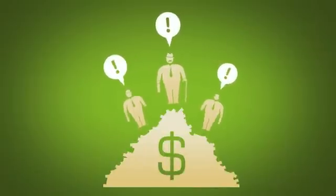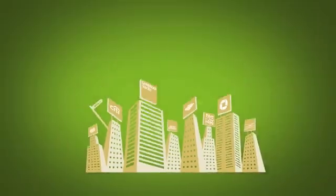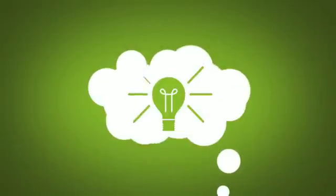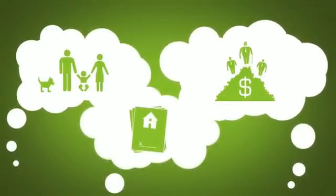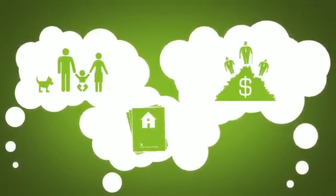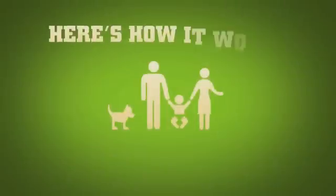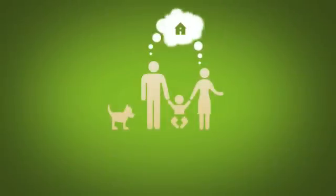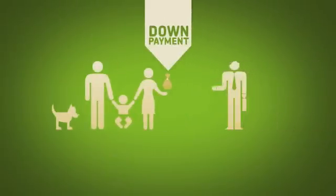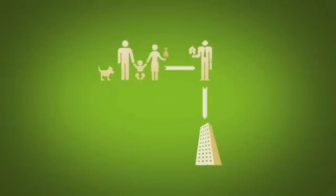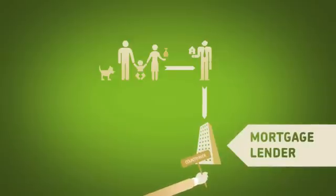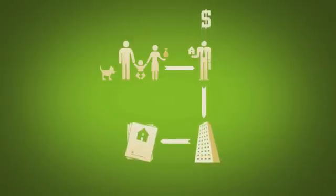The investors see this and want a piece of the action. And this gives Wall Street an idea. They can connect the investors to the homeowners through mortgages. Here's how it works. A family wants a house. So they save for a down payment and contact a mortgage broker. The mortgage broker connects the family to a lender who gives them a mortgage. The broker makes a nice commission.